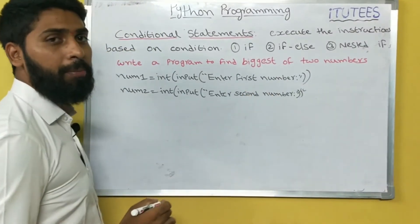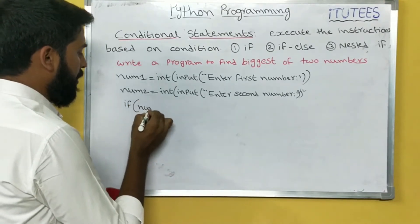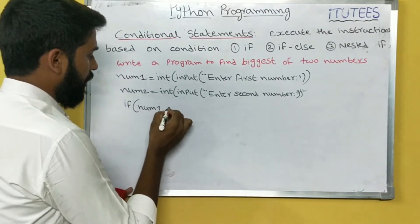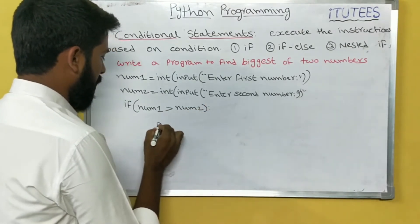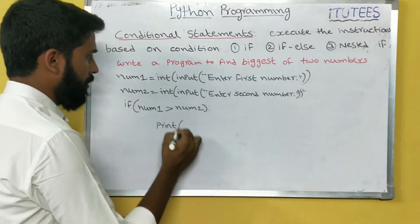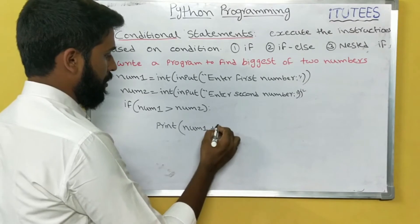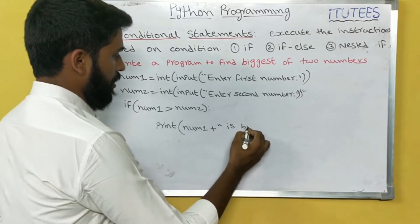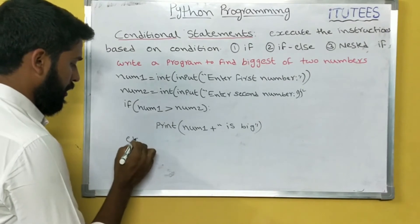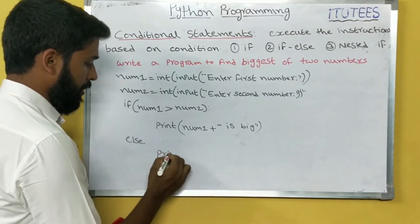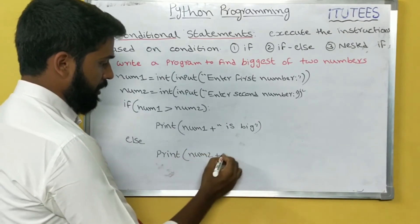To determine the biggest number: if number1 is greater than number2, print 'number1 is bigger'; else print 'number2 is bigger'.